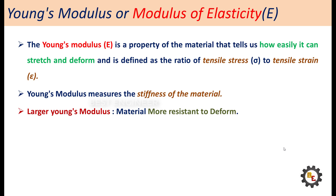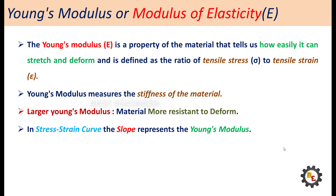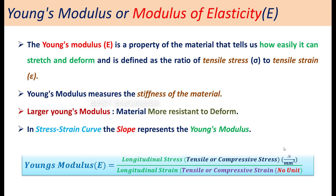In the stress-strain curve, the slope shows the Young's modulus. That is, Young's modulus is the ratio between longitudinal stress to longitudinal strain. The unit of Young's modulus is newton per square millimeter.